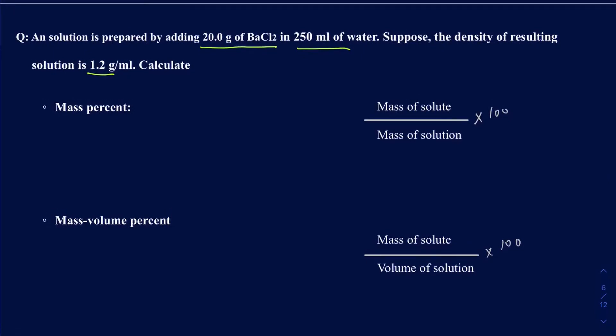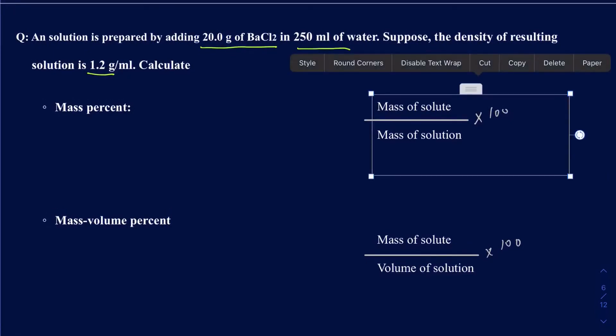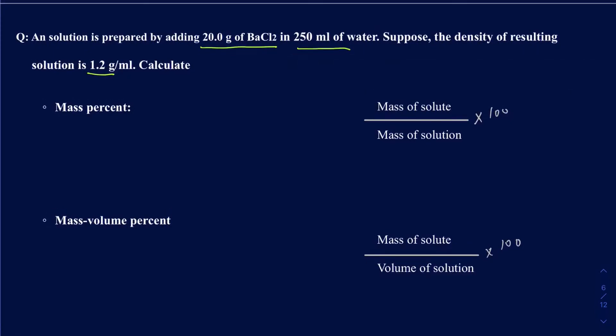250 milliliters of water is going to be the same as 250 grams of water, because the density of water is 1 gram per milliliter.